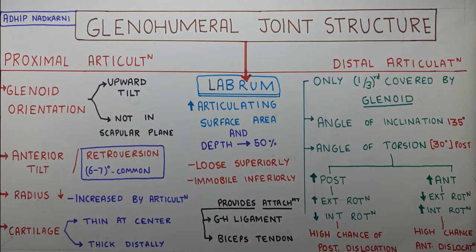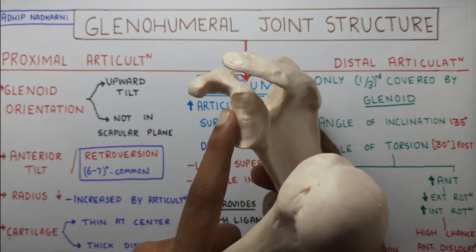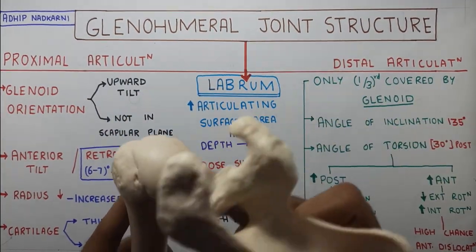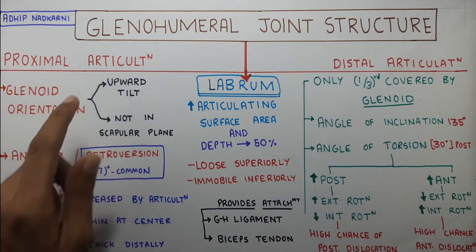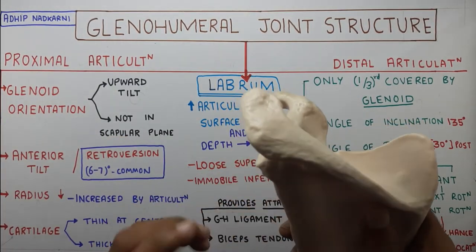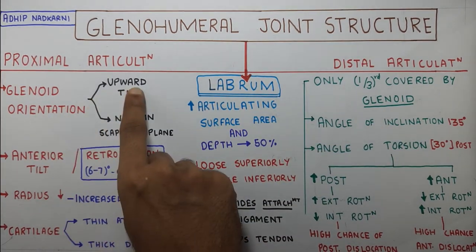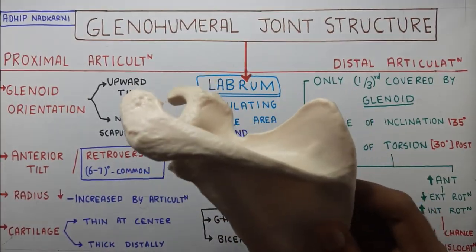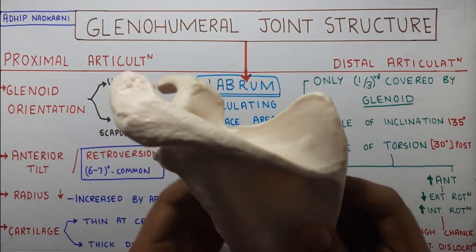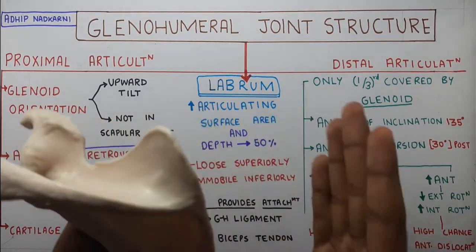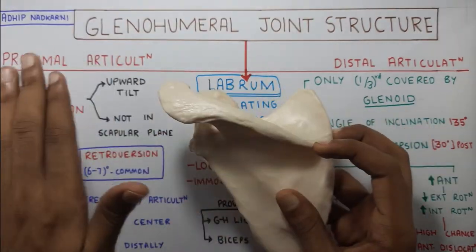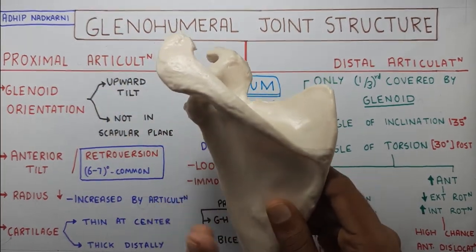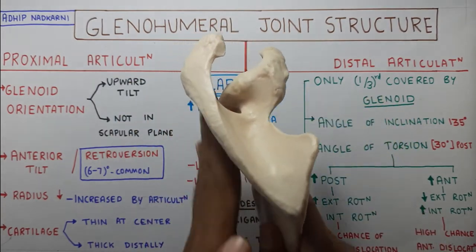Looking at the glenohumeral joint - this is your scapula, this is your glenoid fossa, and this is the humerus where the articulation of the glenoid takes place. So the proximal articulation is your glenoid, and the orientation of the glenoid is very important. It is upwardly tilted and also it is not in the scapular plane. The scapular plane is the plane in which the scapula is angled - the scapula is not exactly in the coronal plane, it is slightly angled forward.